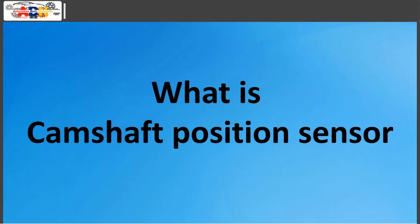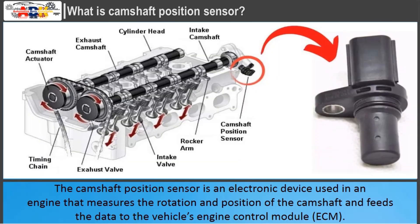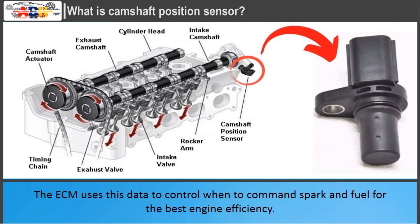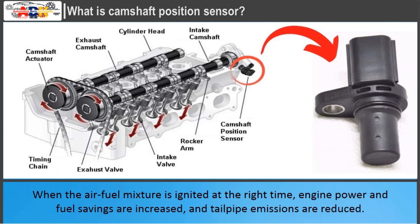The camshaft position sensor is an electronic device used in an engine that measures the rotation and position of the camshaft and feeds the data to the vehicle's engine control module. The ECM uses this data to control when to command spark and fuel for the best engine efficiency. When the air-fuel mixture is ignited at the right time, engine power and fuel savings are increased and tailpipe emissions are reduced.